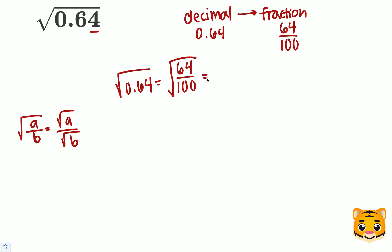Using this in our equation, we can then write the square root of 64 over 100 as the square root of 64 over the square root of 100.